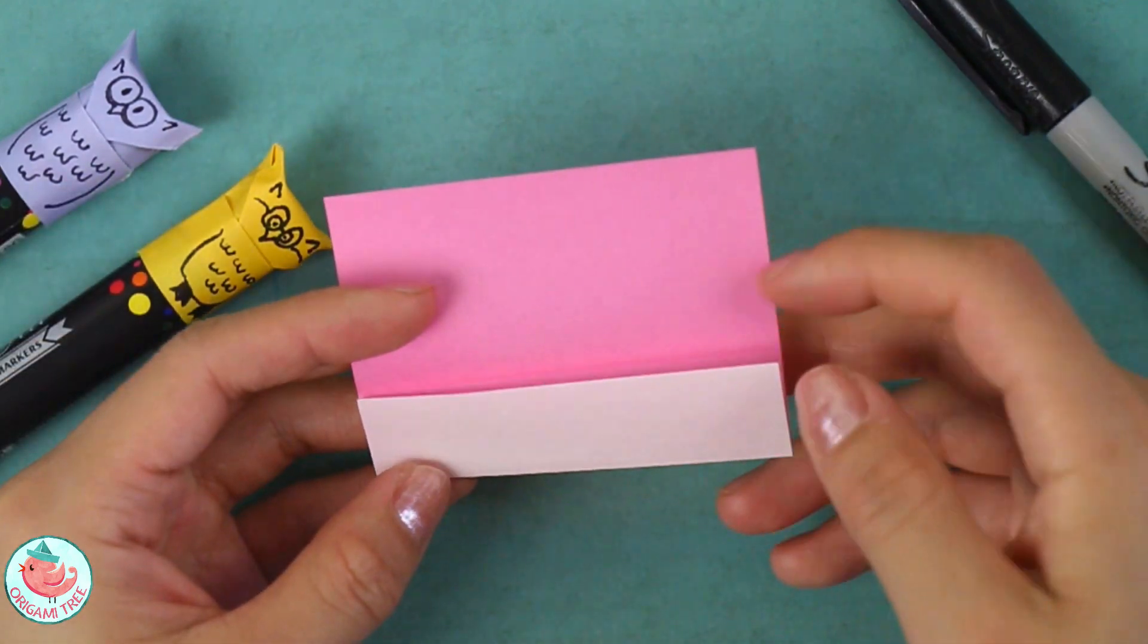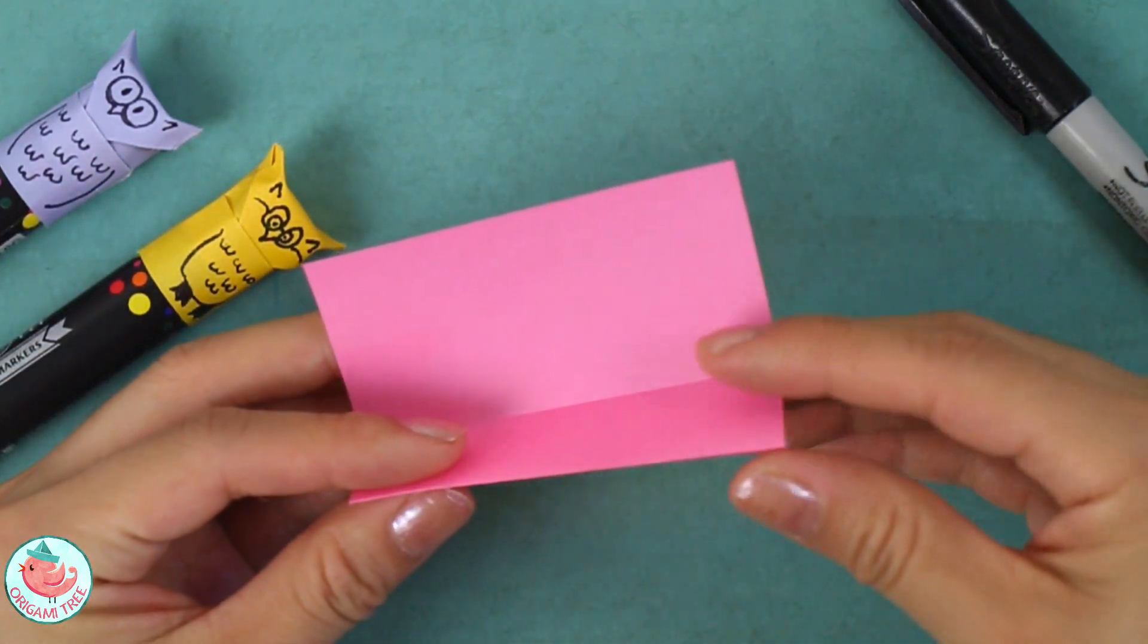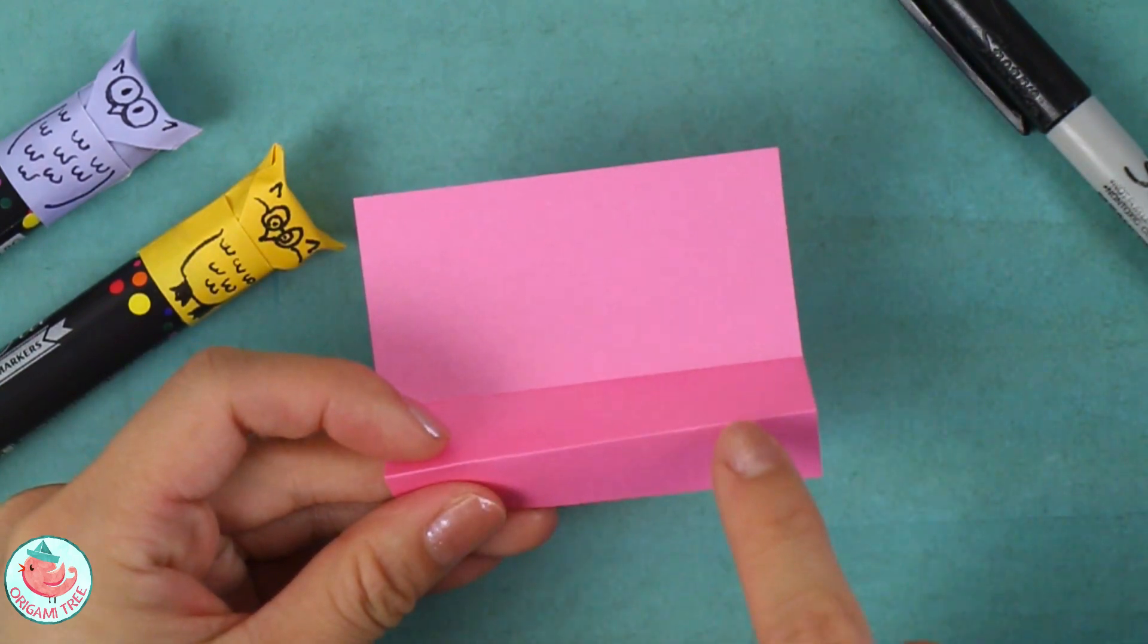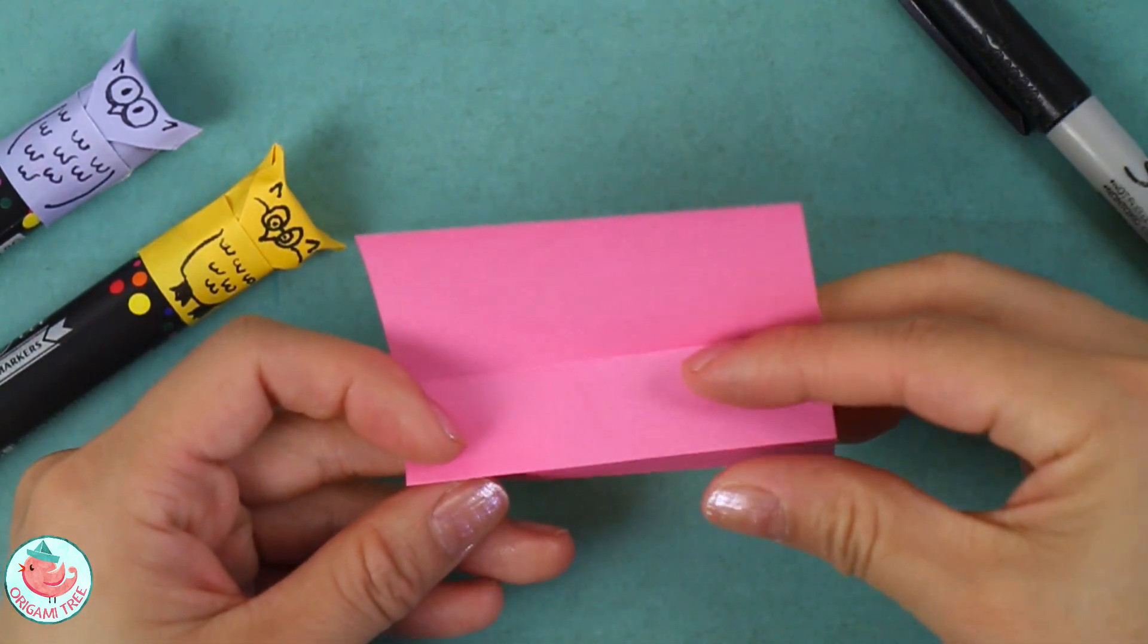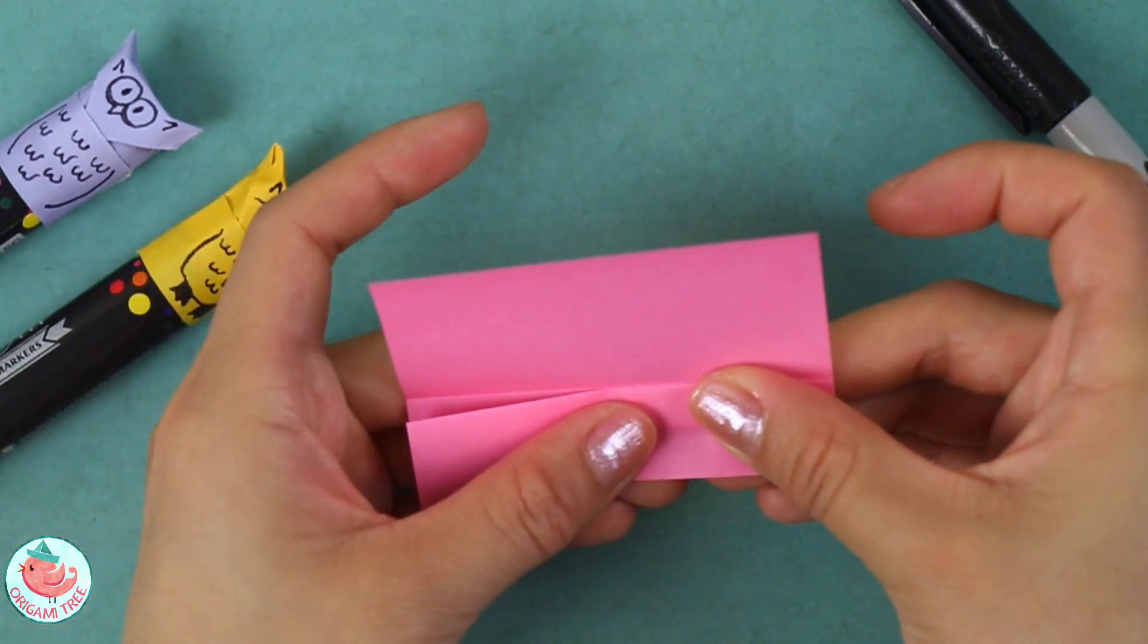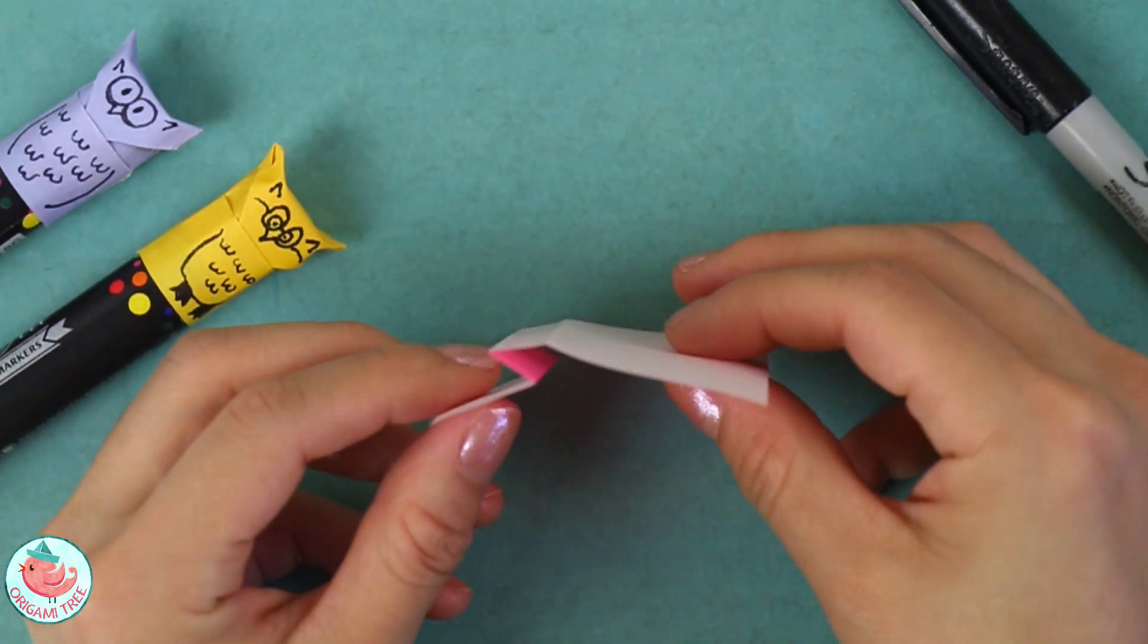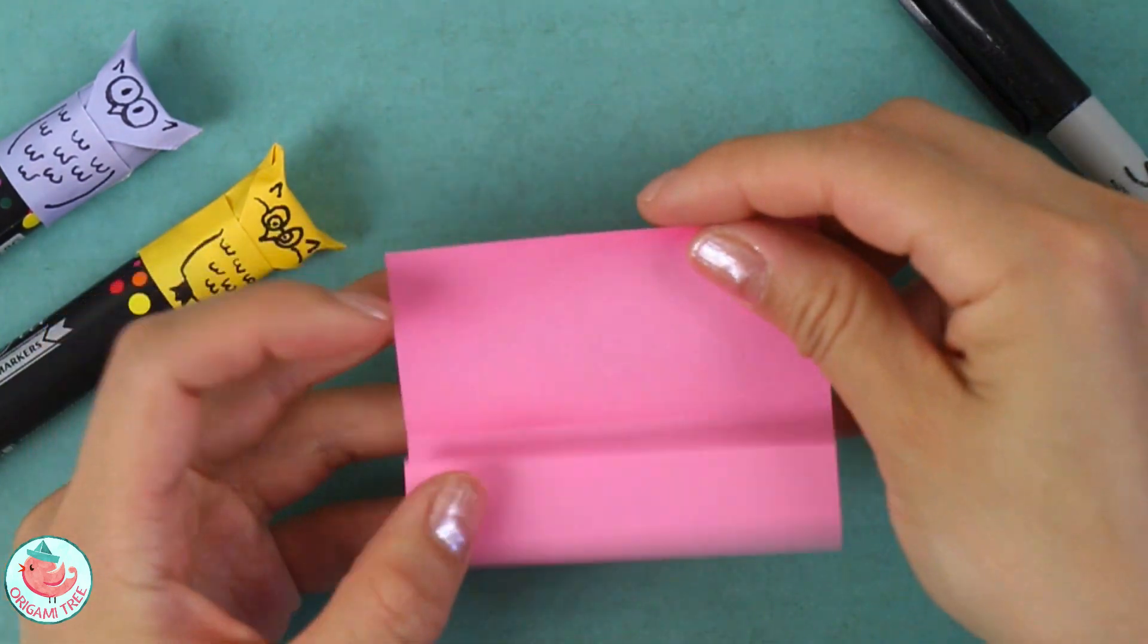Unfold and reverse that fold that you just made, then take this side over here and align it to that center crease. Just fold it straight up, align it to the center crease and crease it in. From the side you're going to have a little zigzag.